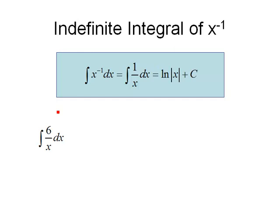So let's go ahead and use that rule. Let's find the antiderivative of 6 over x dx. The first thing I'm going to do is pull out my 6 and write this as 6 times the antiderivative of 1 over x dx, and now I'll apply the rule that we have up here above, and I get 6 times ln of absolute value of x plus c.